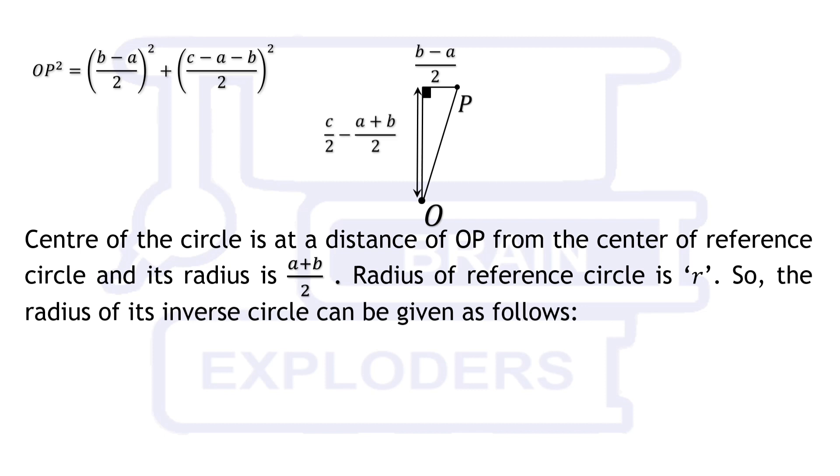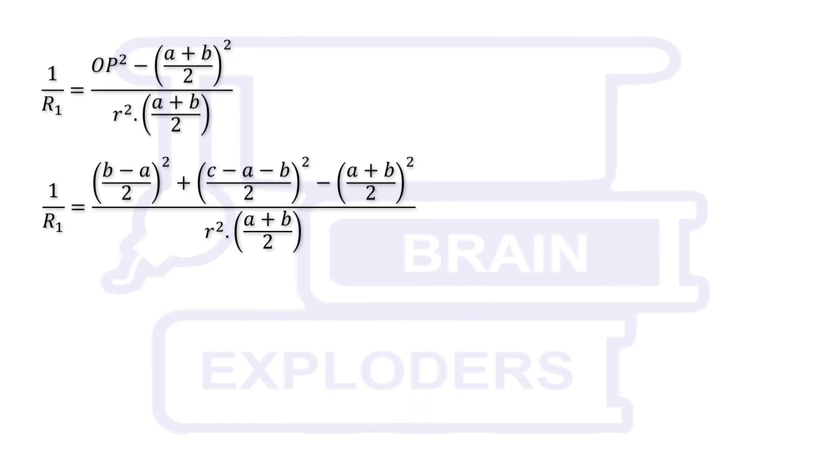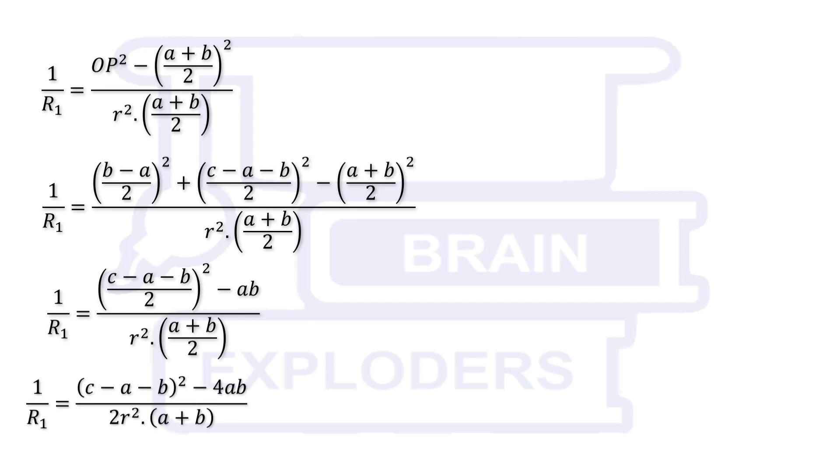Radius of reference circle is r. So, the radius of its inverse circle can be given as follows. This relation is already discussed in this video. On simplifying, we find that one over r1 is equal to c minus a minus b whole squared minus 4ab over 2r squared times a plus b.